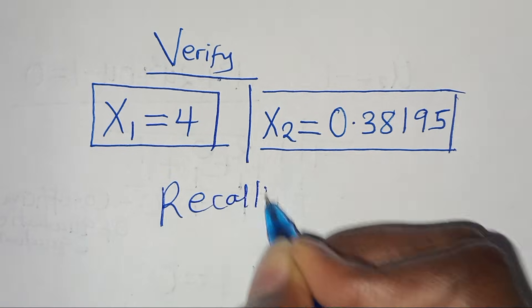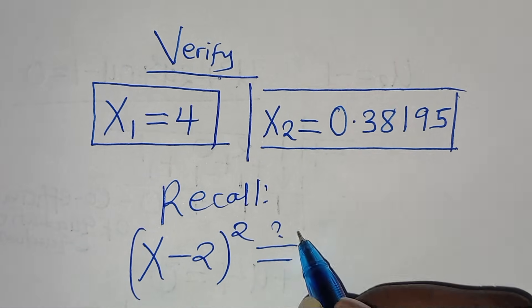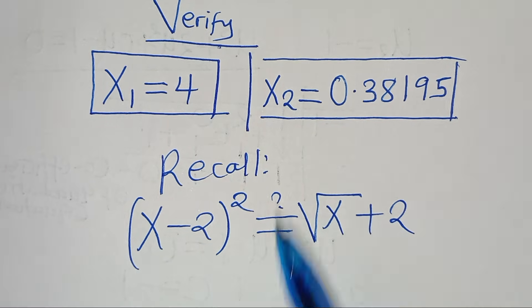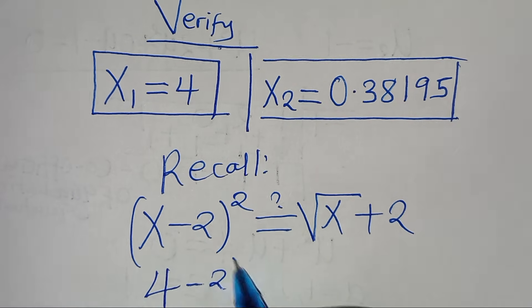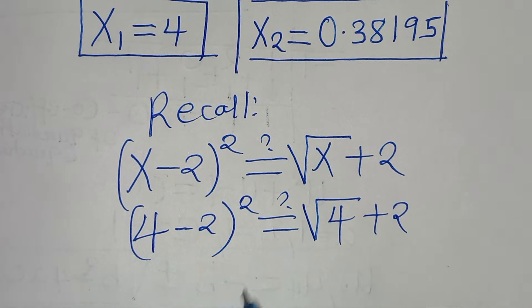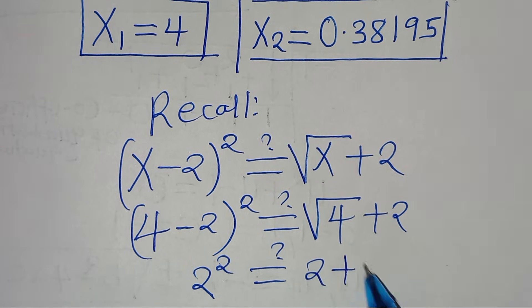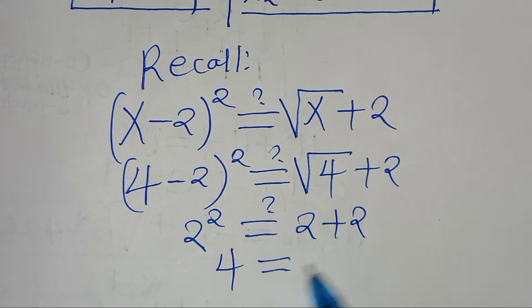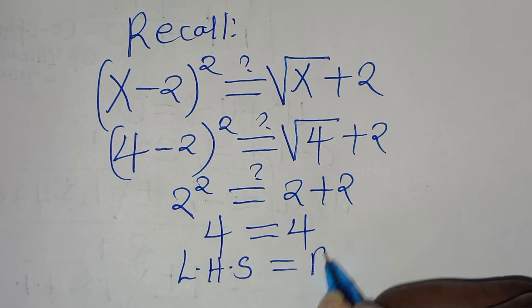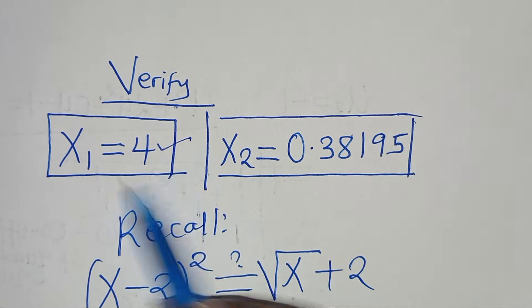Recalling our equation: (x minus 2) squared equals √x plus 2. Substituting x₁ equals 4: (4 minus 2) squared equals √4 plus 2. So 2 squared equals 2 plus 2, which gives 4 equals 4. The left-hand side equals the right-hand side, and this proves that x₁ equals 4 satisfies the equation.